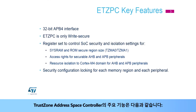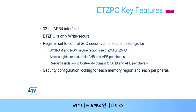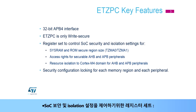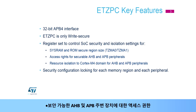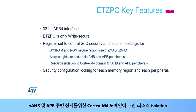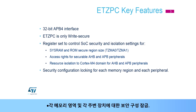The key features of the TrustZone Address Space Controller are: 32-bit APB4 Interface; ETZPC is only write secure; register set to control SoC security and isolation settings for SysRAM and ROM Secure Region Size (TZMA0, TZMA1); access rights for securable AHB and APB peripherals; resource isolation to the Cortex-M4 domain for AHB and APB peripherals; and security configuration locking for each memory region and each peripheral.